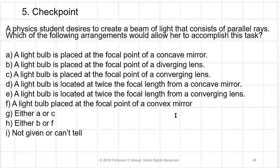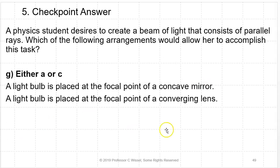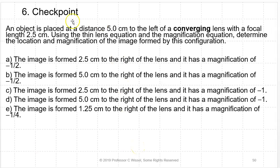A physics student desires to create a beam of light that consists of parallel rays. Which of the following arrangements would allow her to accomplish this? To get parallel rays out, you need to make sure it produces a real image — light must actually pass through it. You need either a concave mirror or a convex (converging) lens. The object should be placed at the focal point, because if you have light coming out parallel, the object must be located at the focal point. The correct answer is: a light bulb placed at the focal point of a converging (positive) lens.